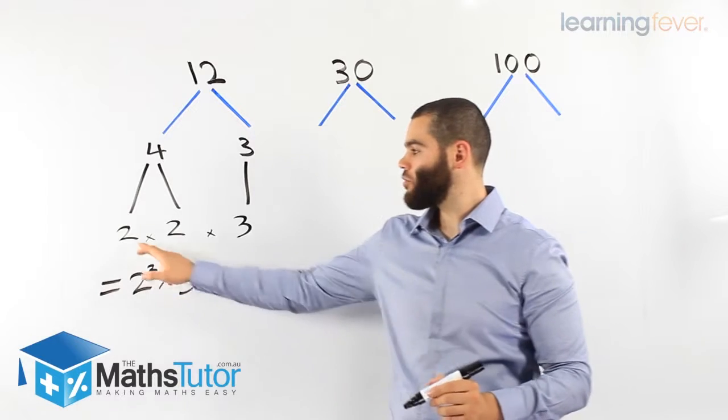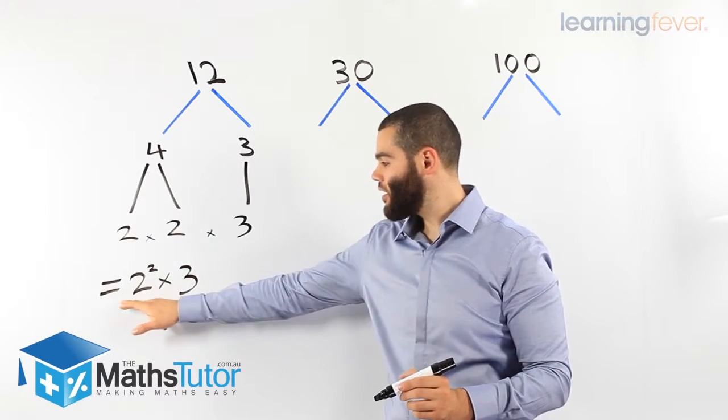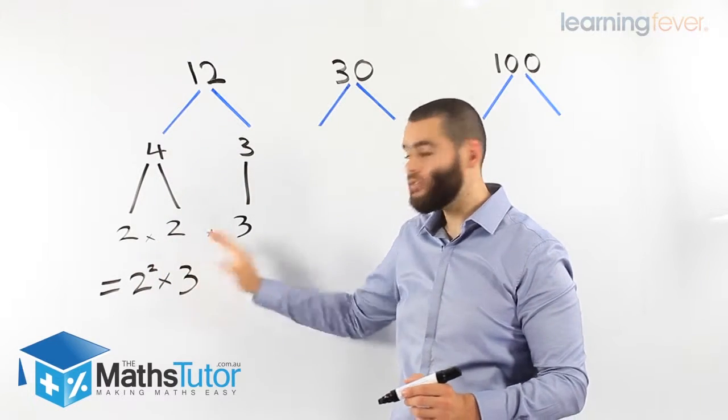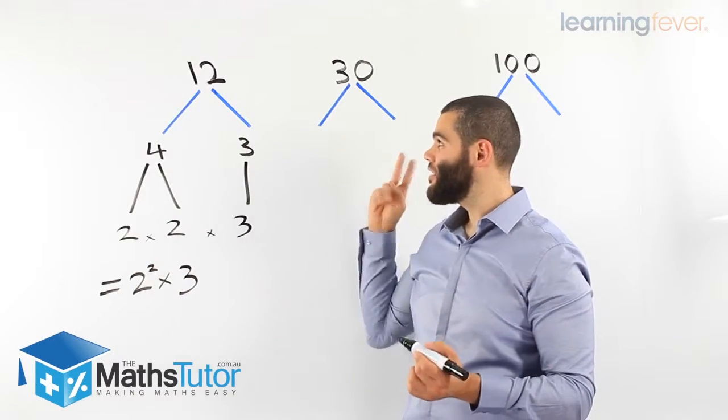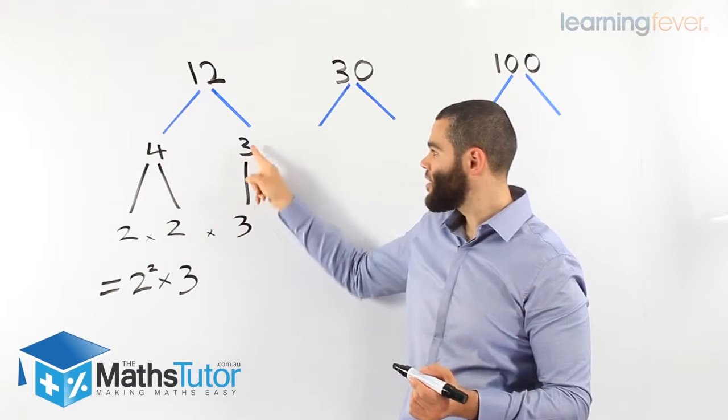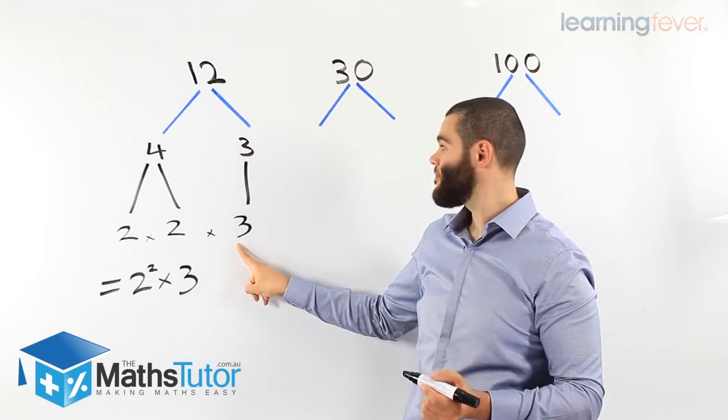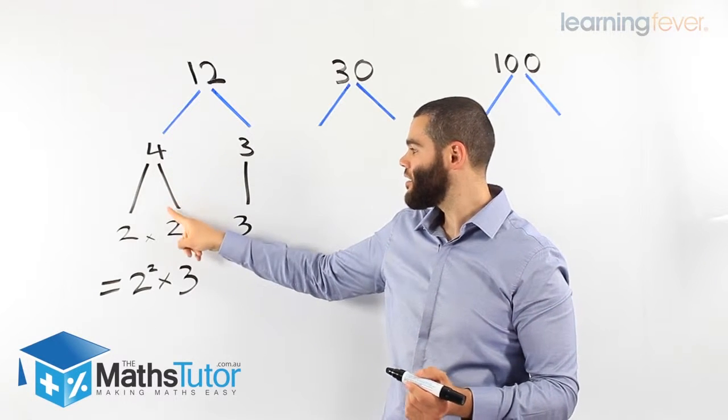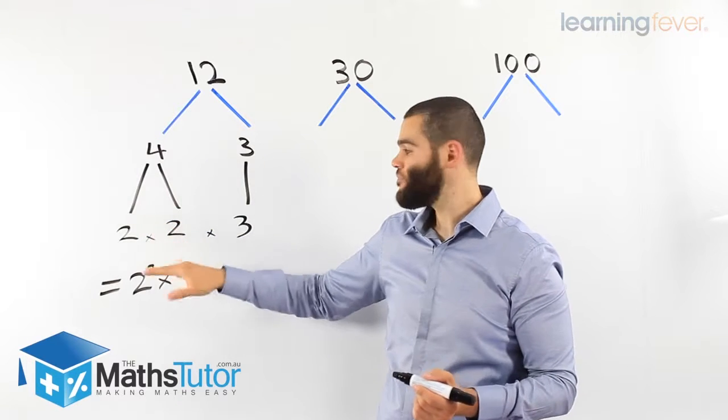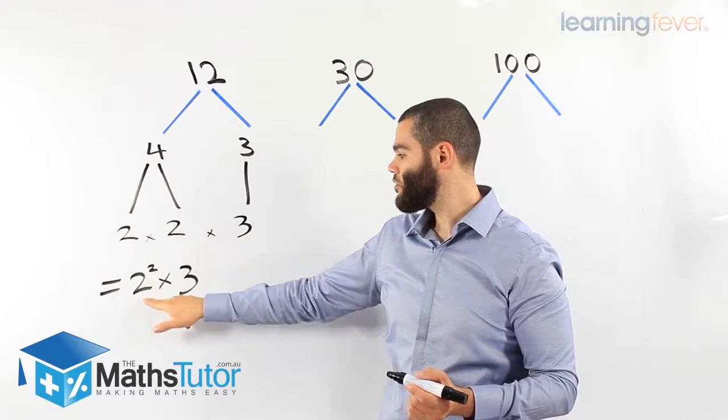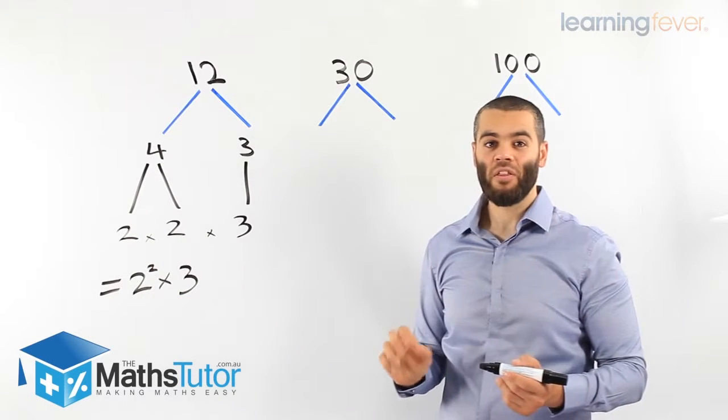So our answer is 2 squared times 3. 2 squared meaning 2 times 2 times 3, these are the prime numbers that multiply to get 12. We've just solved our first factor tree. How easy? Very easy. We look for the factors of 12, 4 and 3. 3 is a prime number, it goes straight down. 4 gets broken down again because it's a composite number. 2 times 2 come down, 2 times 2 times 3, 2 squared times 3.